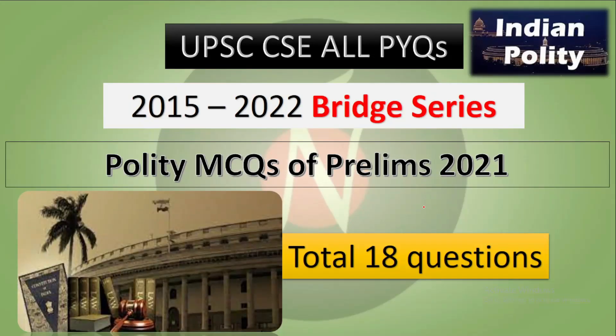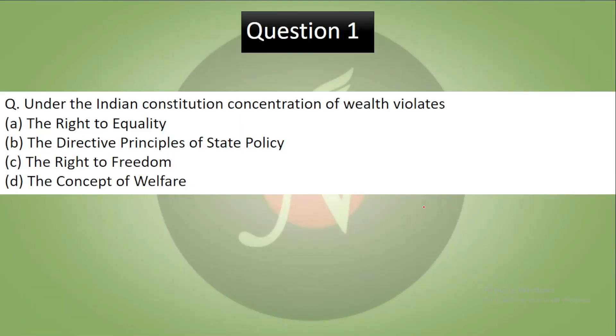Hello everyone, very warm welcome to the YouTube channel of Analyst IAS. Our today's topic for Bridge Series discussion is the quality MCQs which came in the Prelims of 2021. Total questions which came were 18. The Bridge Series idea was that you can get an estimate of which fields UPSC is pushing questions in.